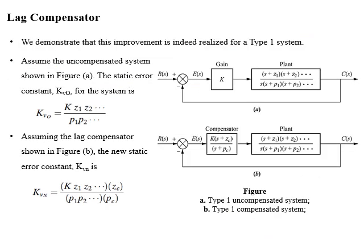Now we will demonstrate the improvement in steady-state error for a system of type one. If you look at figure A, we have a type one system and we have to improve its steady-state error. Its static error velocity constant KV₀ will be equal to the product of gains multiplied by zeros location divided by poles.